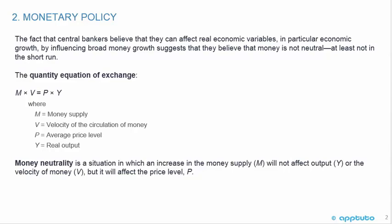The fact that central bankers believe that they can affect real economic variables like Y means that they believe money is not neutral, because money neutrality means that it will affect the price level P and not affect Y.